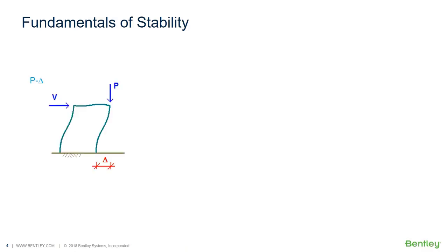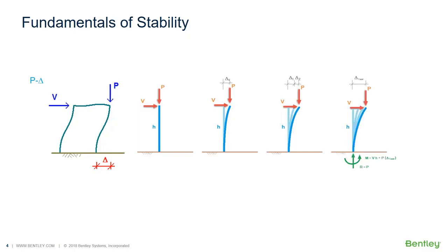Large P-delta is the effect of vertical loads acting on the laterally displaced structure. In the initial state, the structure is subjected to horizontal and vertical loads. As the structure displaces horizontally, the vertical load acting on the displaced structure produces an additional moment in the structure. This moment results in additional displacement, which results in additional moment, and so forth, until the structure reaches equilibrium.